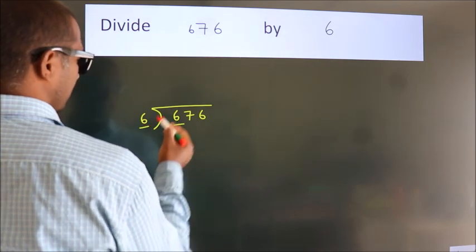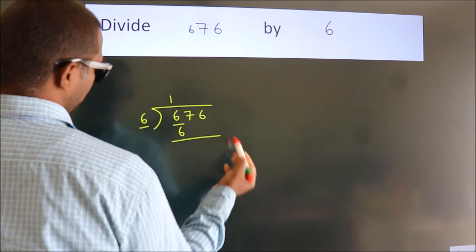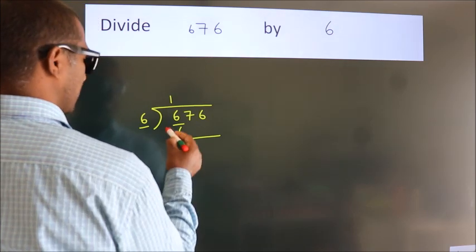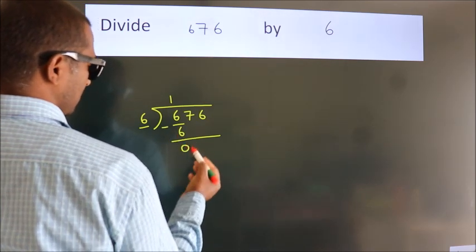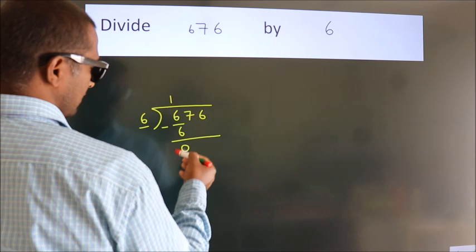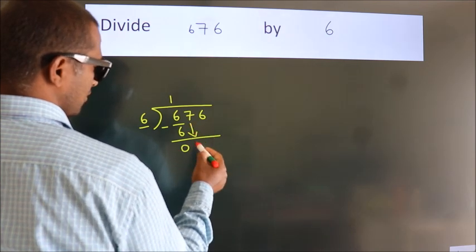Six ones are six. Now we subtract and get zero. After this, bring down the next number.